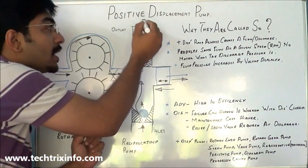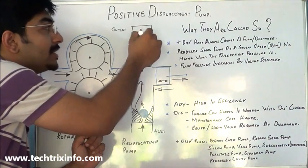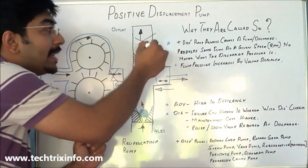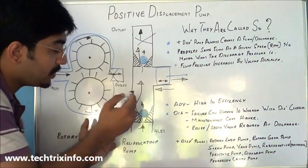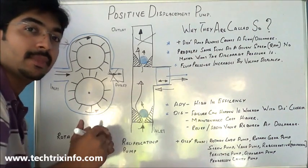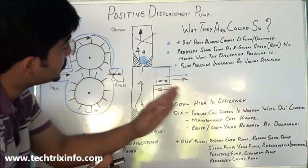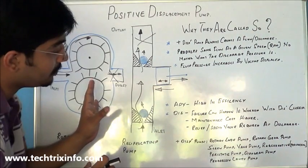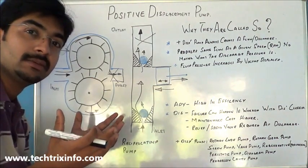Whenever this reciprocating pump works, there will always be a displacement. So if we close the outlet, pressure will develop in that region and result in the mechanical failure of the reciprocating type pump.